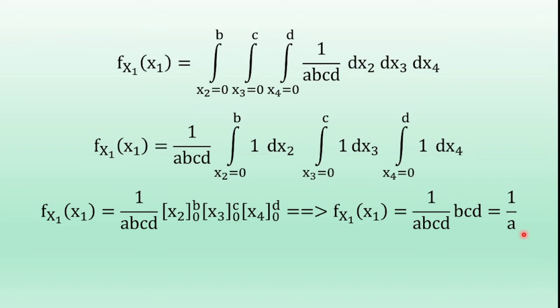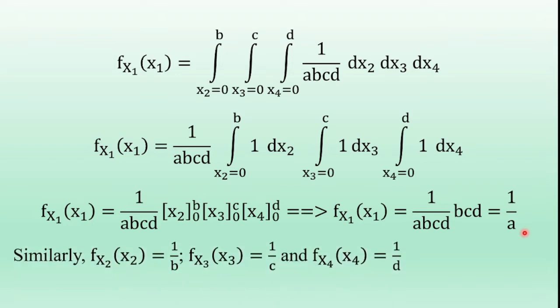So the marginal density function of x1 is 1/a. In the same manner, the marginal density function of x2 is 1/b, the marginal density function of x3 is 1/c, and the marginal density function of x4 is 1/d.